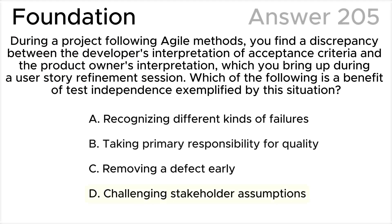The correct answer is D, according to the ISTQB syllabus. Challenging stakeholder assumptions is a benefit of tester independence, and here the developer and product owner are both assuming different things about the acceptance criteria.